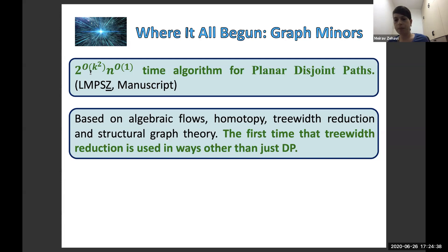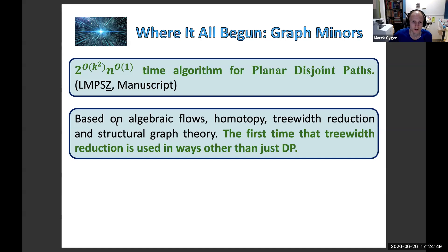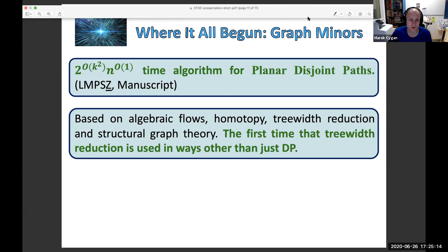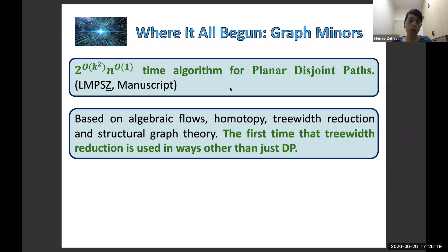Thank you for listening. I can take questions now. Can you please remind me what is known on the lower bound side? We don't know — maybe we can get to 2 to the order k. There is not much known for lower bounds. There is the lower bound when the parameter is treewidth, which I mentioned earlier, but when the parameter is k, I don't know.